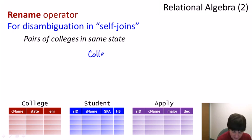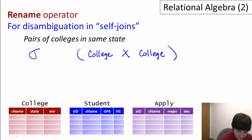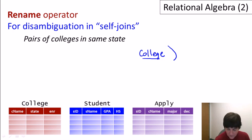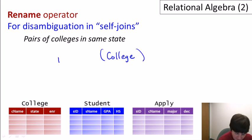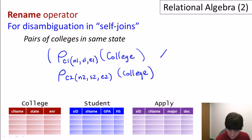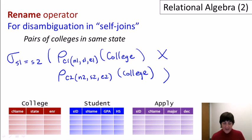We want the cross product of college with college, then select where state equals state — but that doesn't work because we can't distinguish the two instances. So we rename those two instances to give them different names. We take the first instance of college and apply a rename operator calling it C1 with attributes name1, state1, enrollment1. We take the second instance calling it C2 with attributes N2, S2, E2 of college. Now we have two different relations, take their cross product, and select where S1 equals S2 — giving us pairs of colleges in the same state.